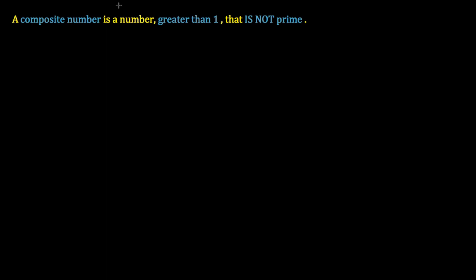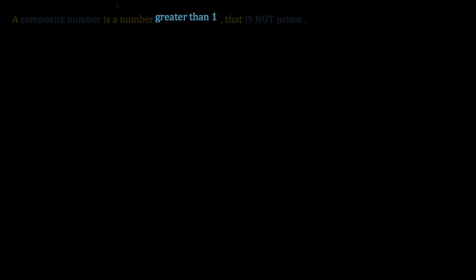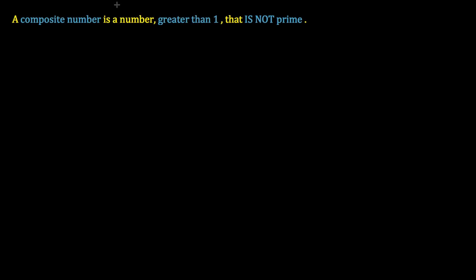In this math talk we introduce the concept of a composite number. Simply stated, a composite number is a number greater than one that is not prime. If you go back through our earlier videos, you would know some prime numbers. Some prime numbers less than 10 would include 2 — our only even prime — 3, 5, and 7.